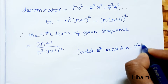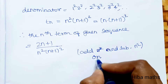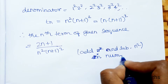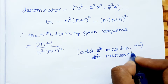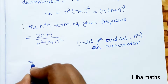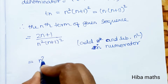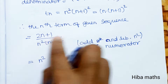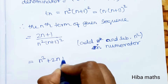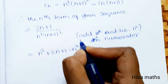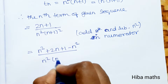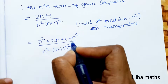We add and subtract n² in the numerator. So we write: [n² + 2n + 1 − n²] divided by n²·(n+1)², separating the first terms and last terms in the numerator.